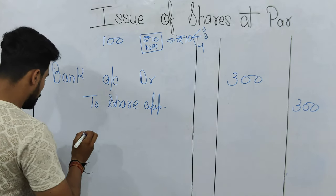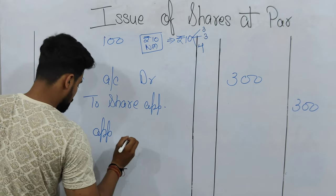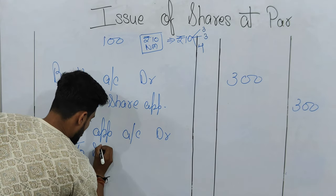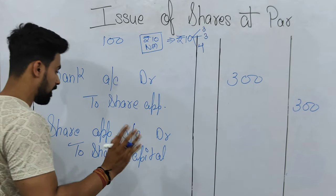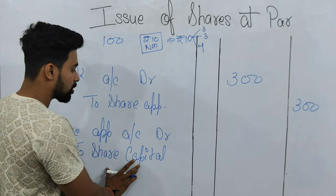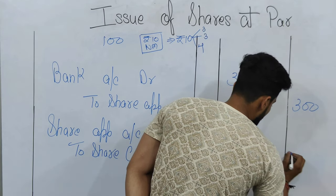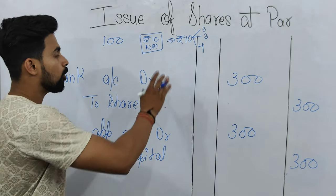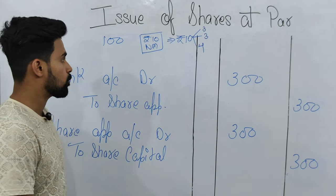The next entry will be: Share Application account debit to Share Capital. The amount again is 100 into 3, that is 300 and 300. After this, nothing special changes — whatever the number of shares, we multiply by the call money, and entries proceed accordingly as studied in the last video. Now our next case is issue of shares at premium.